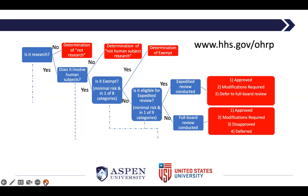Now we're going to get into some nuts and bolts. This slide is dense, but let me walk you through it. When you submit materials to an IRB, an administrator will use a formal process based on the Common Rule to determine what happens with your submission. What I'm showing here is a very basic and general flowchart using federal regulations as a baseline — remember, each institution could have additional policies and procedures.